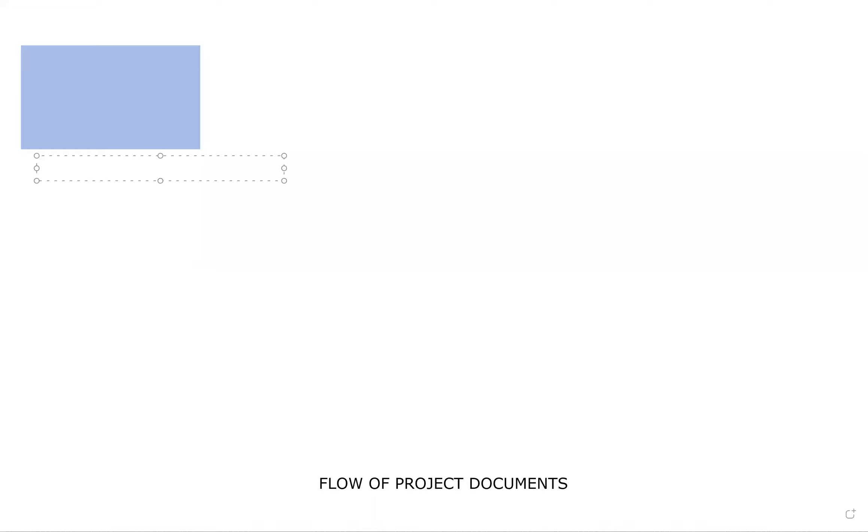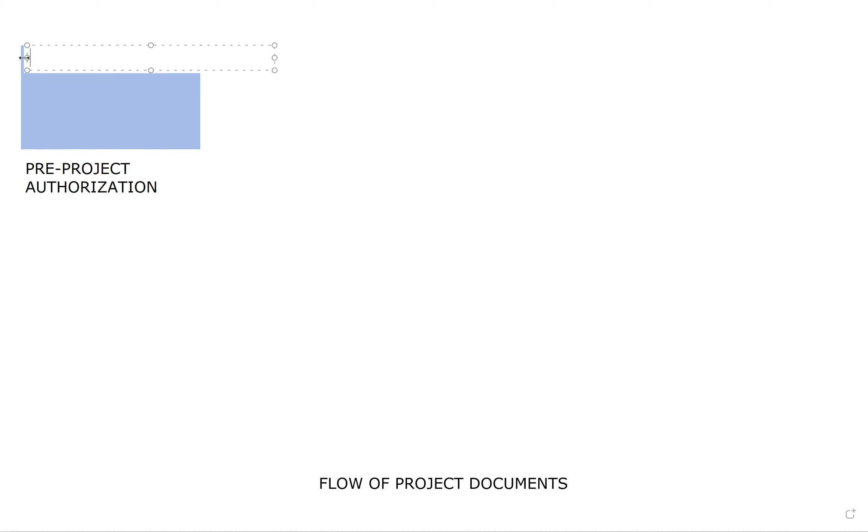We can break down the flow of documents like this. Things that happen pre-project authorization. This starts off with two documents. One is called the business case. The business case makes a case for the project and shows you why the project should be in existence.